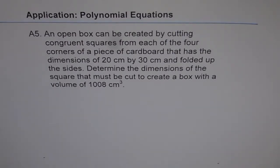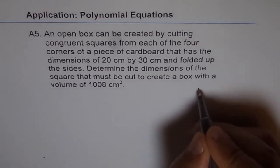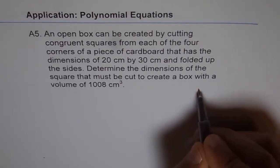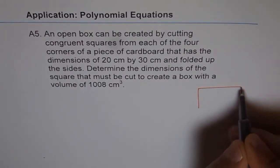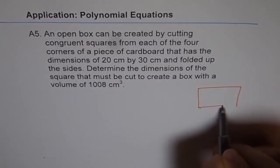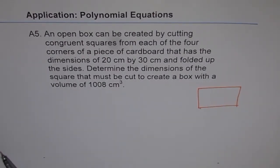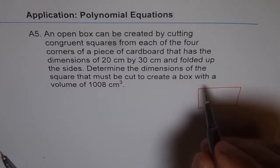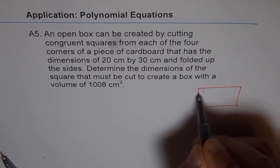Let's first try to sketch a diagram and understand the question. So let's say this is the cardboard box, 20 by 30. And from this box, square corners are cut. So this is the square corner, right? That's what they mean.